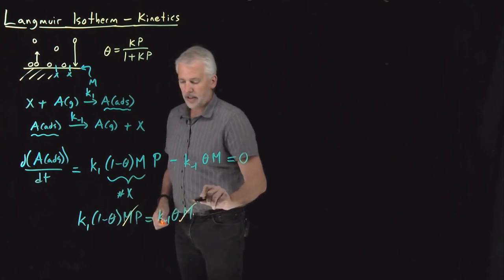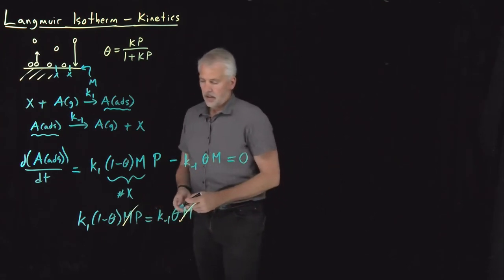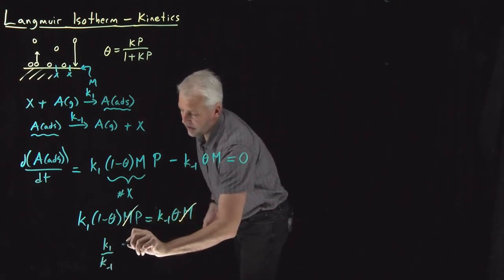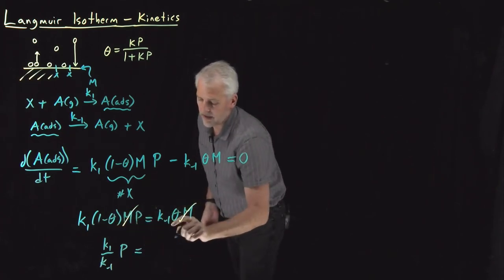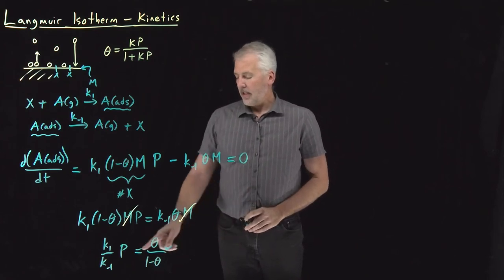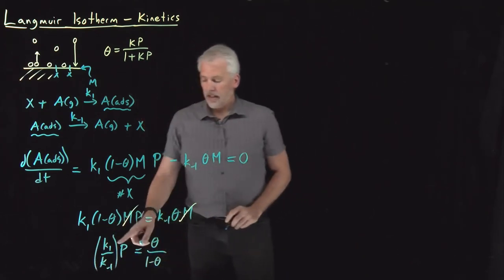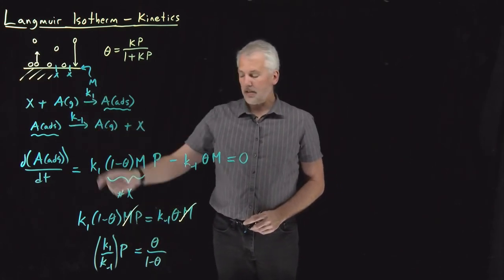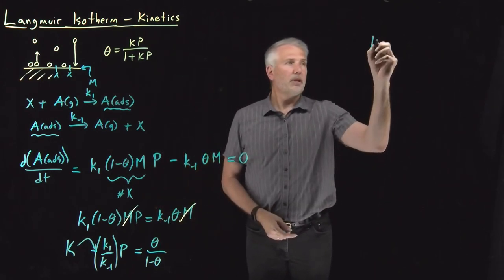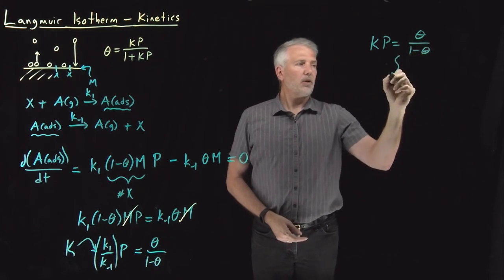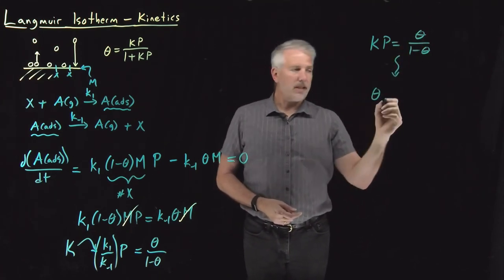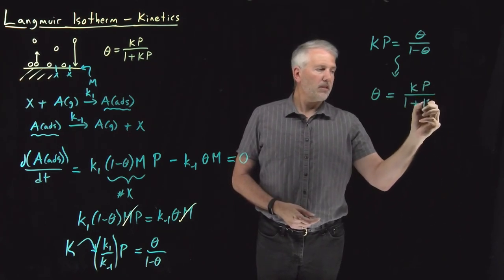There's an m on each side which I can cancel. If I move the k minus 1 over to this side, I'll write k1 over k minus 1. I've got a pressure, and I'll move this 1 minus theta over to the right side, so on the right side I've got theta divided by 1 minus theta. Now I can see that if I just take this ratio of rate constants, the ratio of the forward rate constant to the backwards rate constant, and rename that capital K, then this equation will become KP equals theta over 1 minus theta. Or when I do a little bit of algebra and rearrange that equation solving for theta, I'll get the exact same result as the last time I did that. I'll find that theta is equal to KP over 1 plus KP.